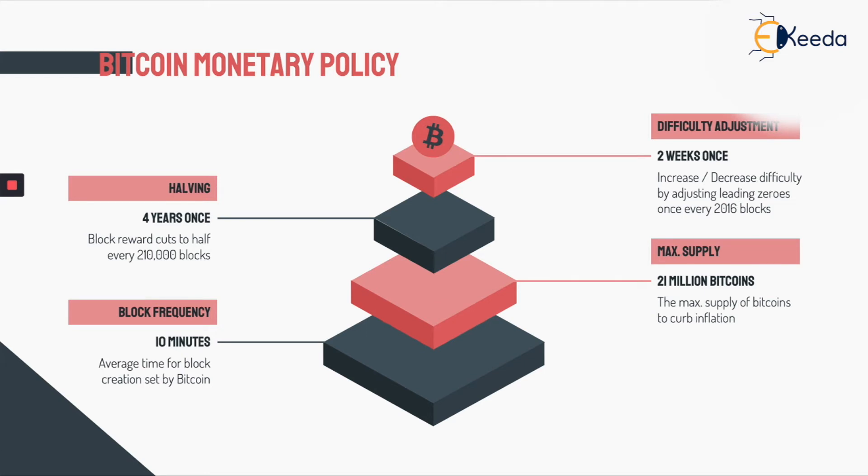Let's dive deeper and understand Bitcoin monetary policy: something called difficulty adjustment, something called halving, then look at maximum supply of Bitcoin and block frequency. These things will help you understand that the rules surrounding Bitcoin are all pre-written into the code itself.